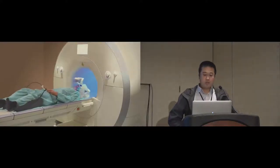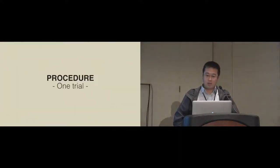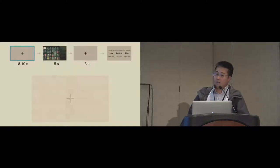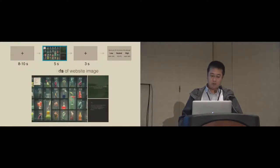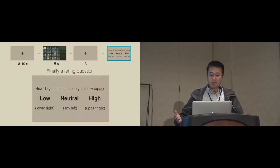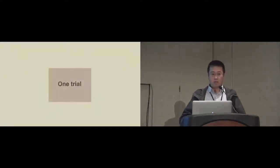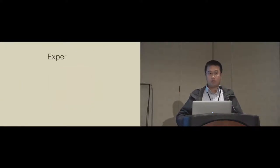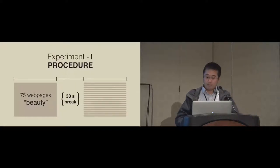These stimuli were then used for participants to view and rate in the fMRI machine. As you can see here, this is a procedure of a trial. In one trial, participants first see 8 to 10 seconds of crosshair. This is followed by viewing the webpage stimuli for five seconds, then followed by three seconds, and then at the end, participants will be asked to rate the stimuli on how beautiful it is or how usable it is. This is repeated for all trials in one group, which is 75 stimuli first, before they move to another group. If they do beauty first, they do usability next. The order is counterbalanced between participants.